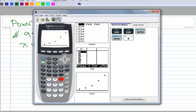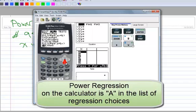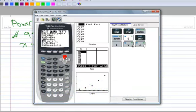Now we want to run a regression. So stat and calc and then power regression, keep going down. One more up here, power regression. There we go.